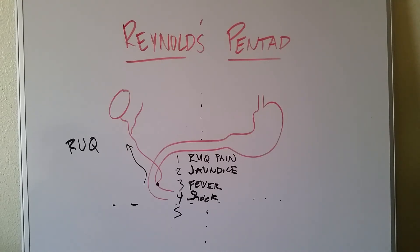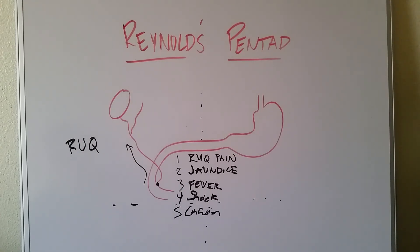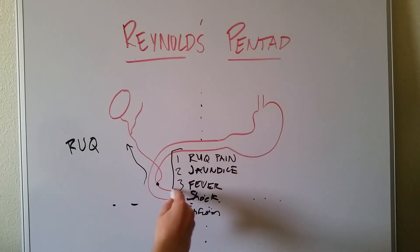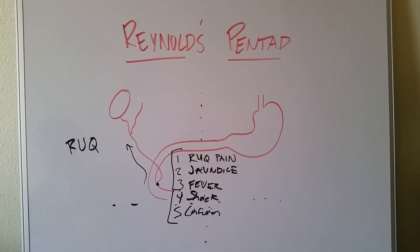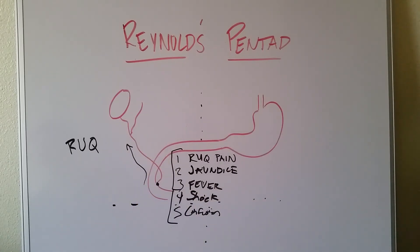And then the fifth is going to be altered mental status, also known as confusion, which commonly accompanies shock and other disease processes. These five things form a pentad — pentad meaning five things. Reynolds Pentad includes Charcot's triad, which are the first three, along with these two new ones, because he wanted to describe really severe cases. And that's Reynolds Pentad for ascending cholangitis — an ascending bacterial infection from the duodenum up through the bile duct system.